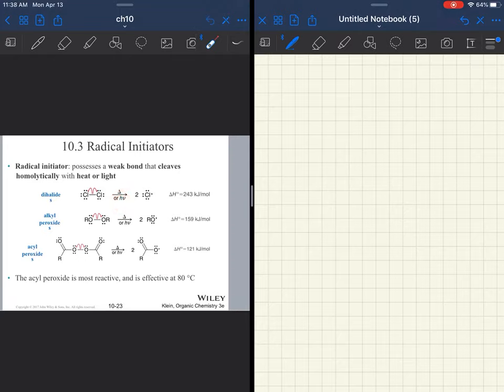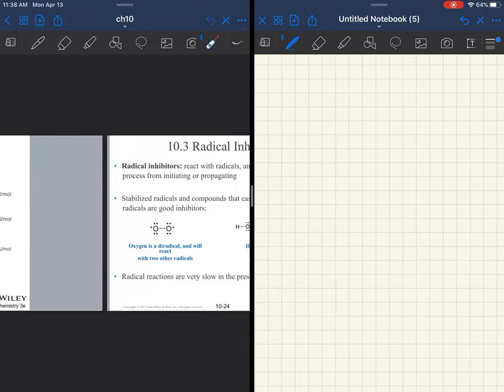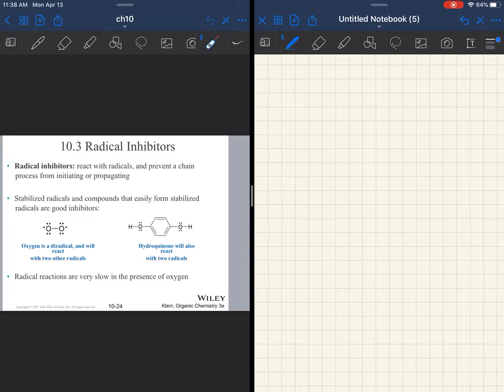Now, radical initiators. Before we get into anything else here, there are several ways to initiate. When we look at this reaction, I will consistently use light. Heat may also be part of it. There are also chemical initiators. You guys used AIBN in lab or in your virtual lab. Peroxides is another chemical initiator. We are going to see that in a subsequent video. Acyl peroxides is an initiator. It's not one that we're going to take a look at, but there are several different ways to initiate.